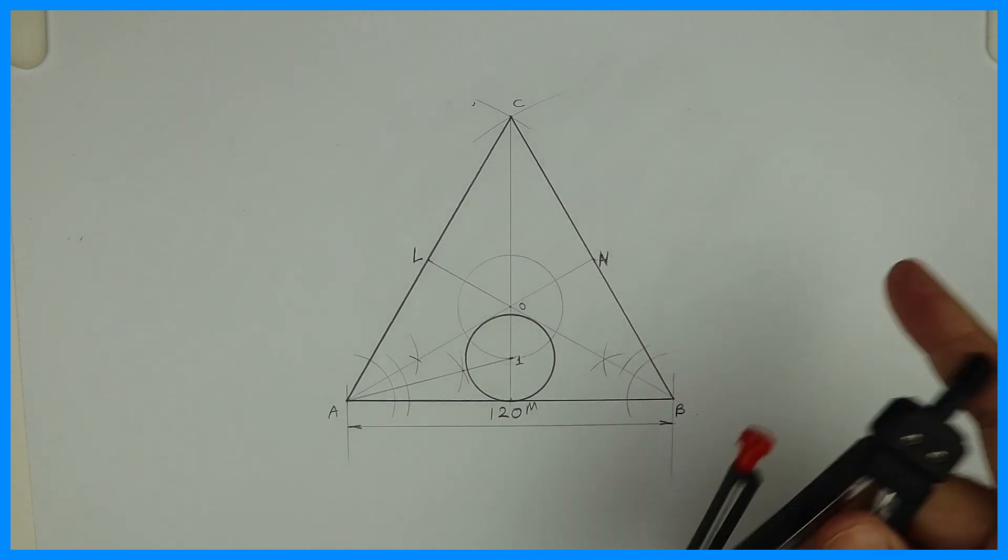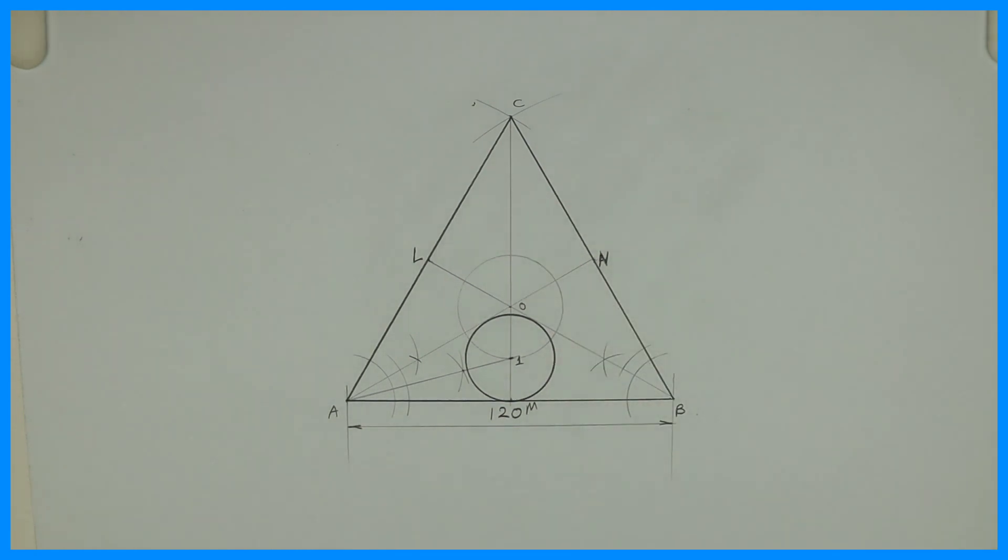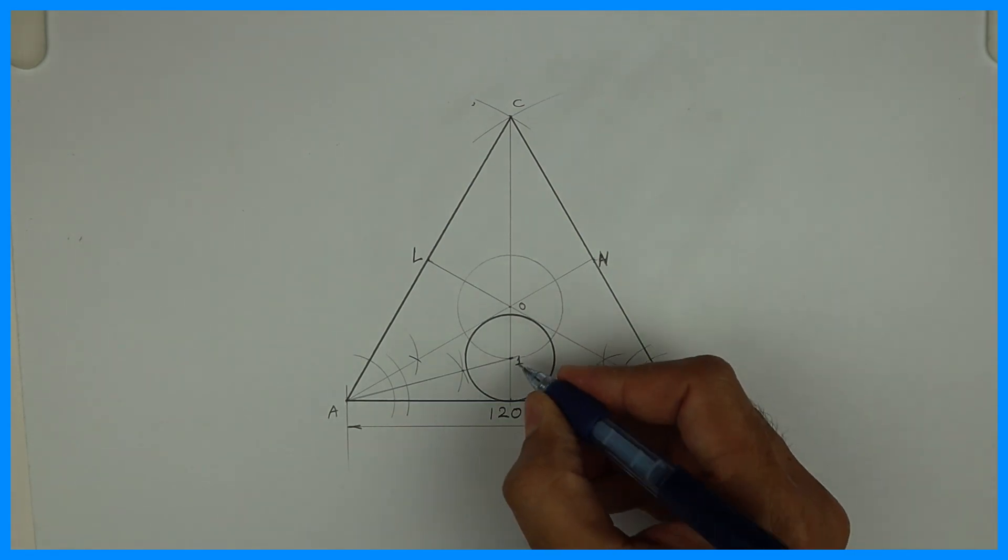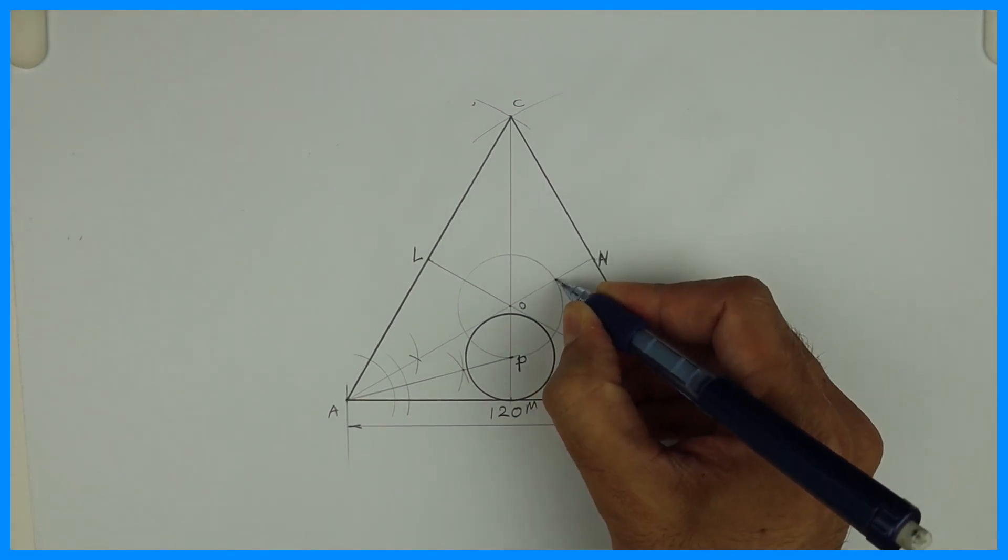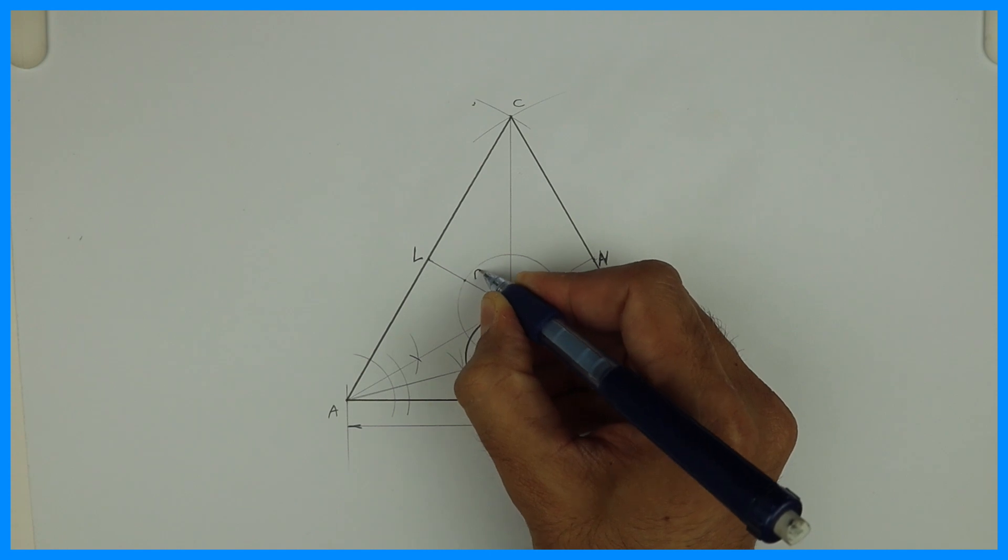I can bisect this also, OBC. Then also I will get the same point. So we have transferred the point. Let's say this point is P. So then this point would be Q. This point would be R.